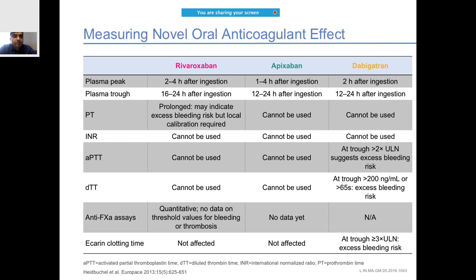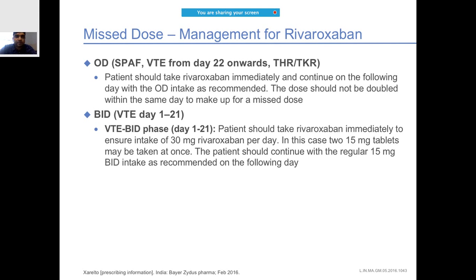The antidote available for dabigatran is called Praxbind commercially - its generic name is idarucizumab. This should be kept specifically for dabigatran only and is not the universal antidote for all NOACs.